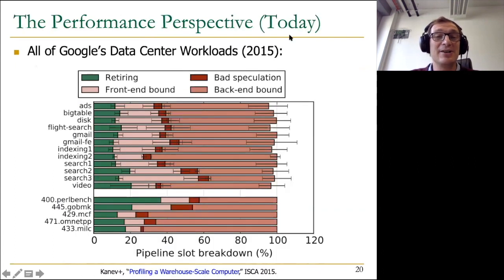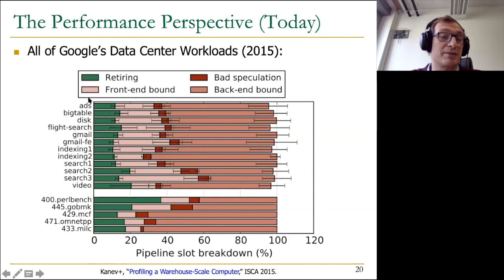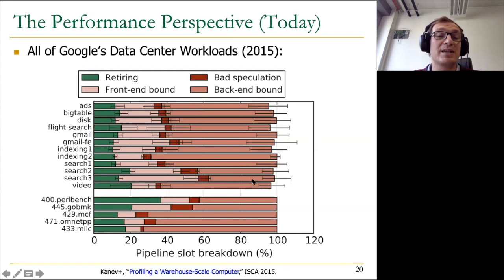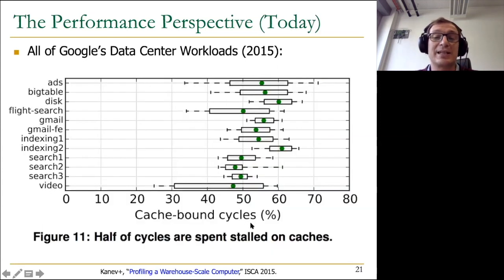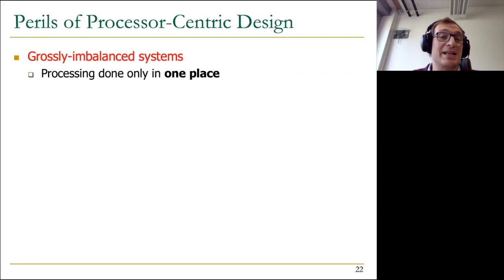Google showed that in all of their data center workloads — video search, indexing, Gmail, BigTable, ads — the processors in their data center are waiting for data most of the time, doing useful work only 10 to 20% of the time. Clearly this doesn't sound good. This is more than 20 years of history showing that even though processors got better, they're still waiting for data. We will keep waiting for data if we keep designing systems the way we're designing them — meaning we have a grossly imbalanced system.